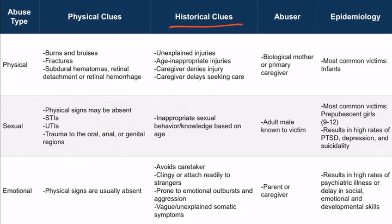There are also historical clues that can indicate physical abuse. For example, unexplained injuries, or if a caregiver explains an injury but it doesn't make sense based on the patient's age — these are age-inappropriate injuries. A good example is a caregiver saying their two-month-old was climbing on a table and fell off; a two-month-old can't even crawl. A caregiver may even deny an obvious injury, or they may delay bringing the child in for care. Most parents would bring their child in right away, but abusive parents often put this off due to embarrassment or fear.